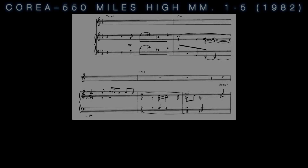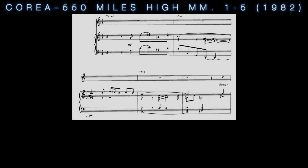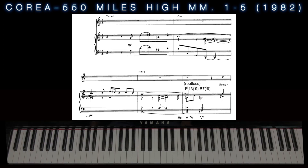In Chick Corea's 1982 arrangement of '500 Miles High,' his Scriabin influence shows through at the downbeat of the fifth measure, where he plays split octaves, then moves the inner voices down in parallel to split thirds, alluding to a back-cycled F-sharp 7 chord resolving to a B7♯9.